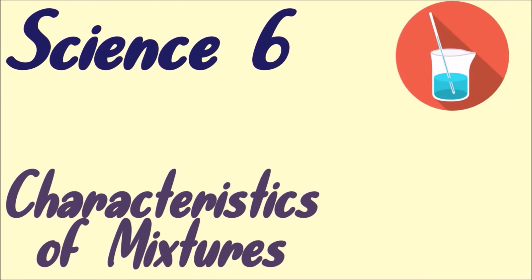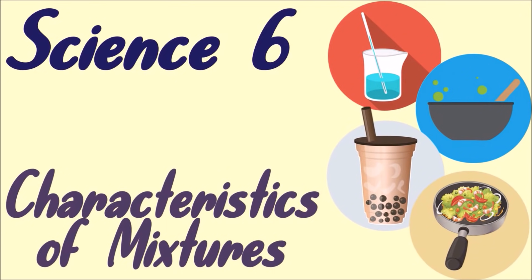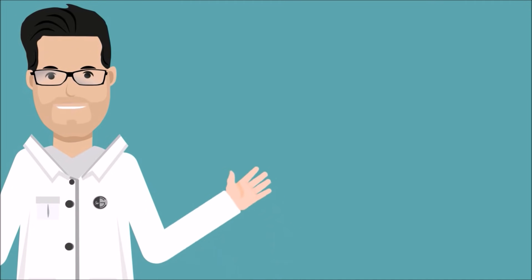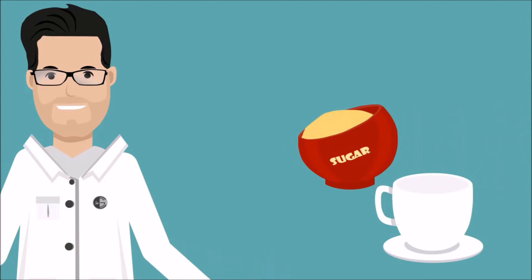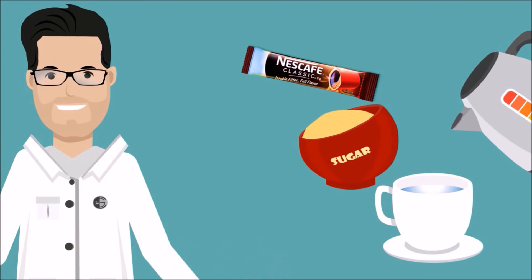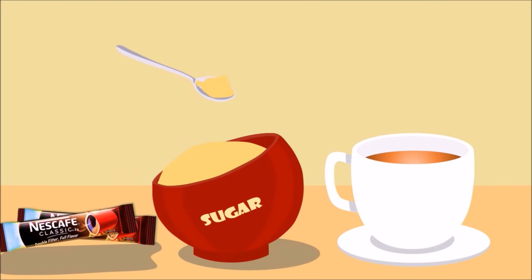Let's talk about mixtures and their characteristics. What is formed when two or more substances like water, coffee, and sugar are combined? When you mix coffee powder, sugar, and water, you form a mixture.